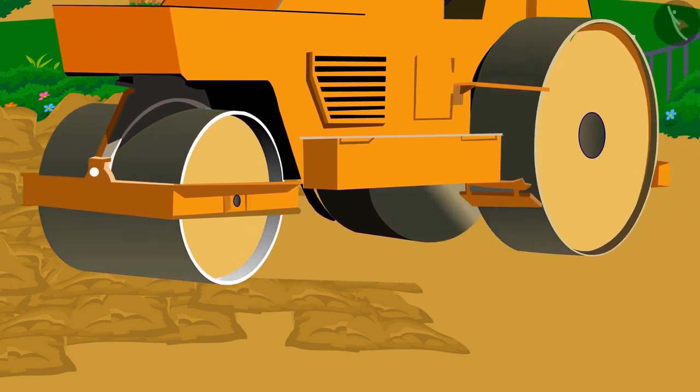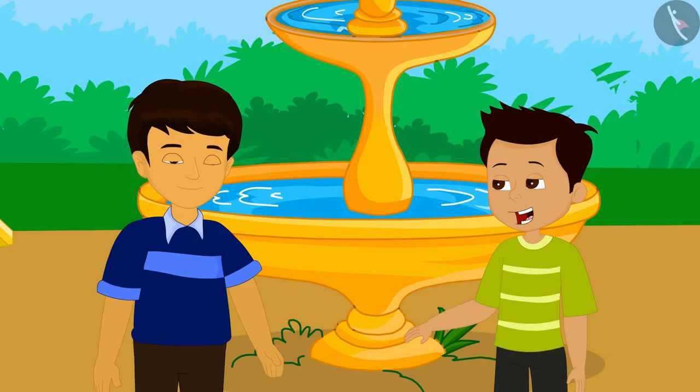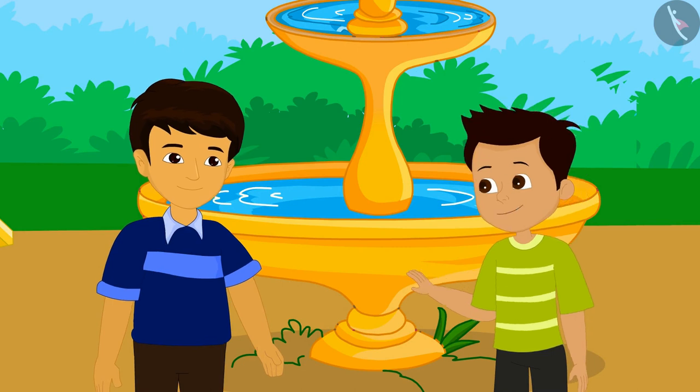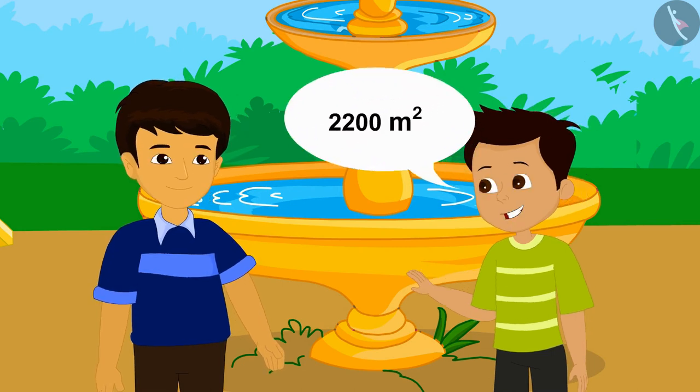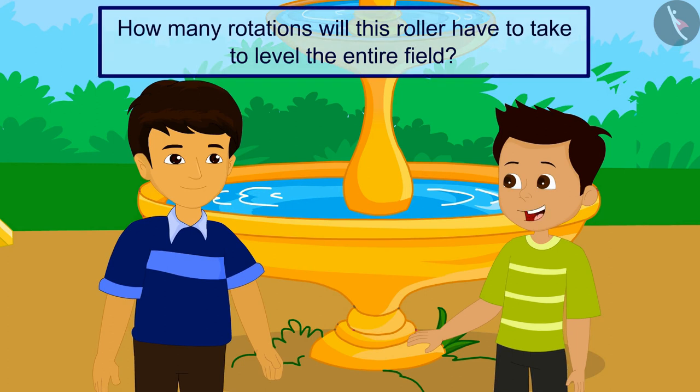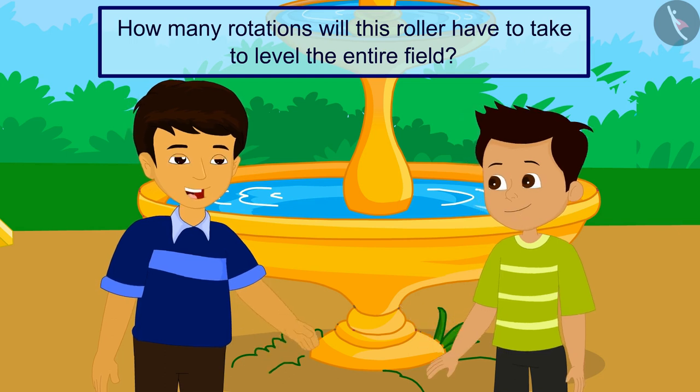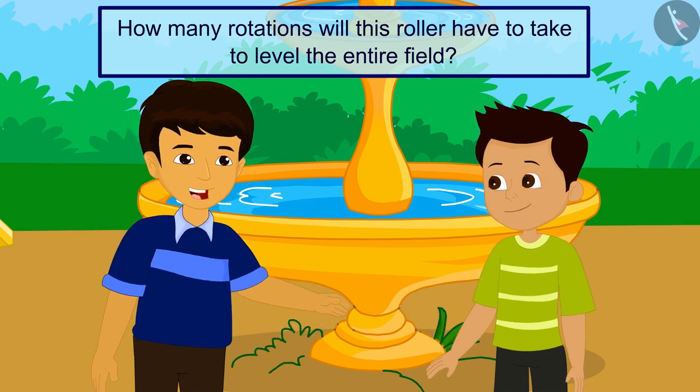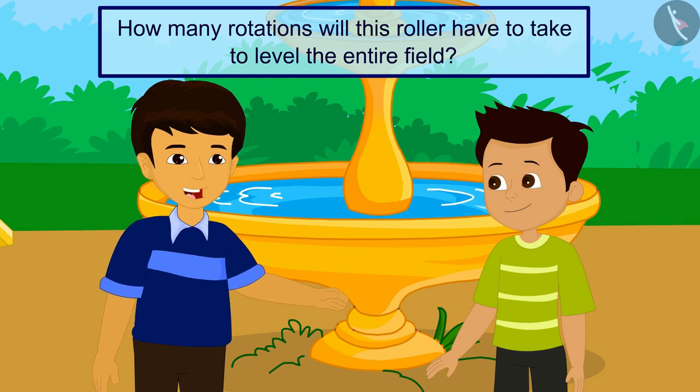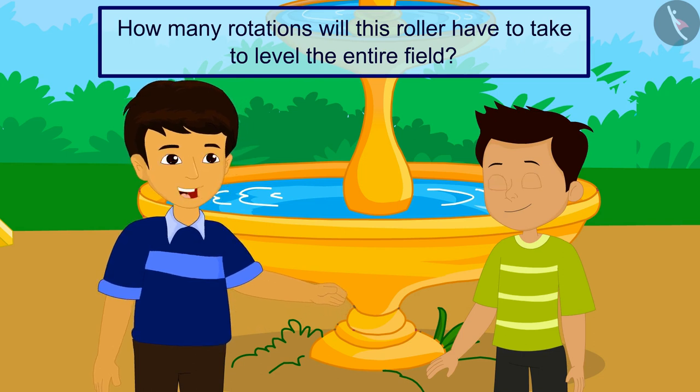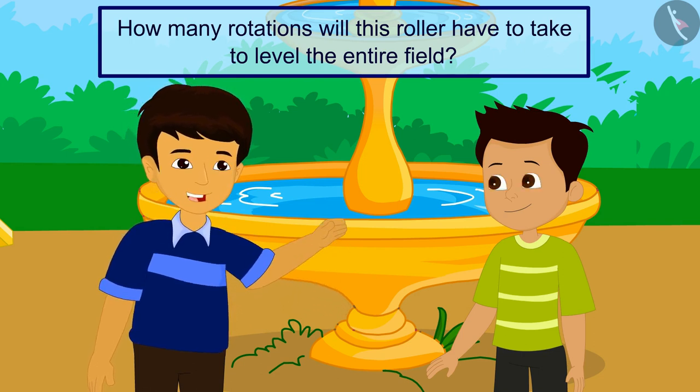The area of the ground is 2200 square meters. Then how many rotations will this roller have to take to level the entire field? We can find this very easily through mathematics. That means it's math time.